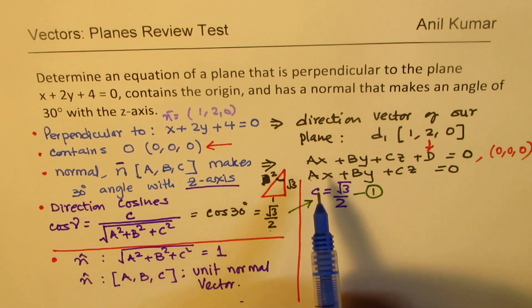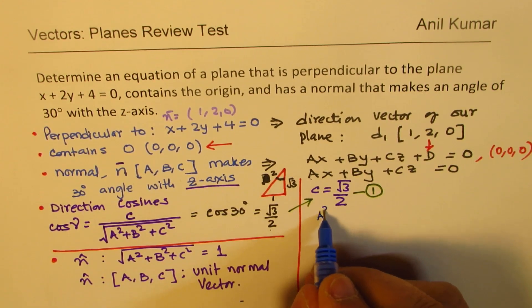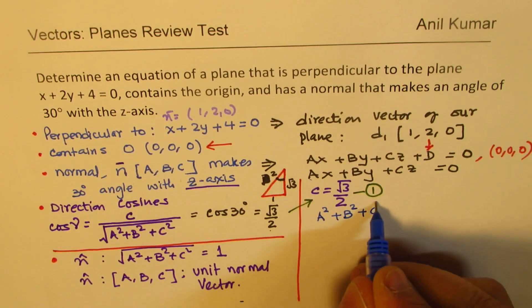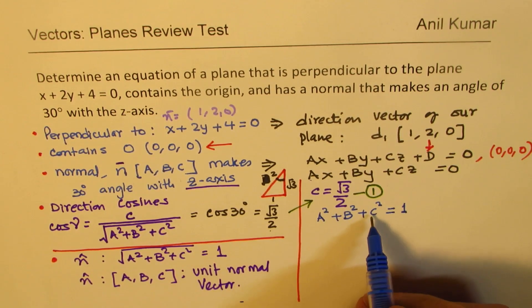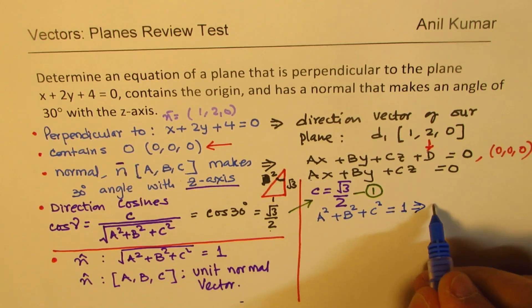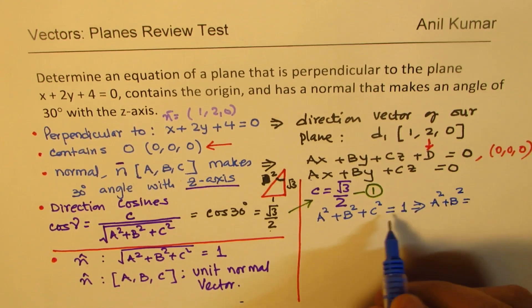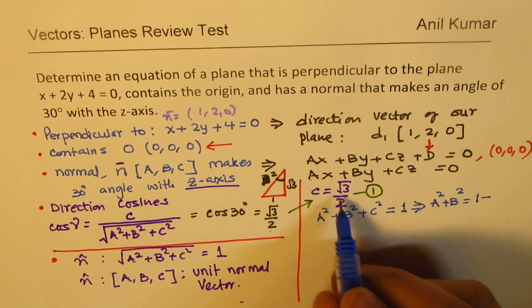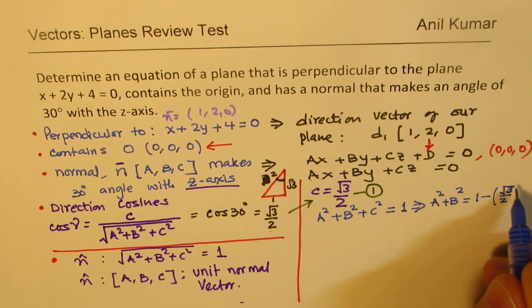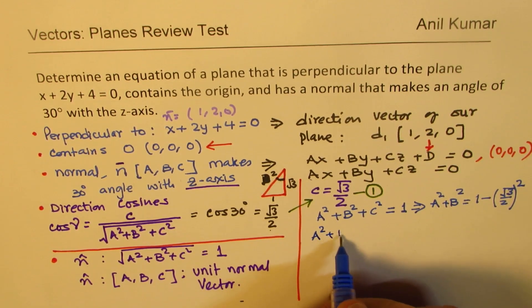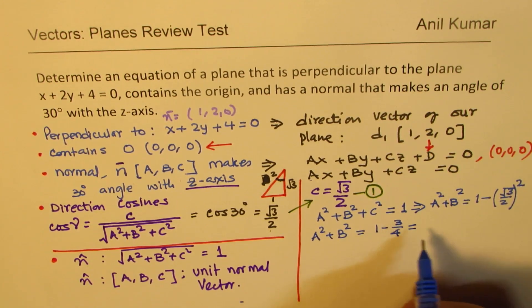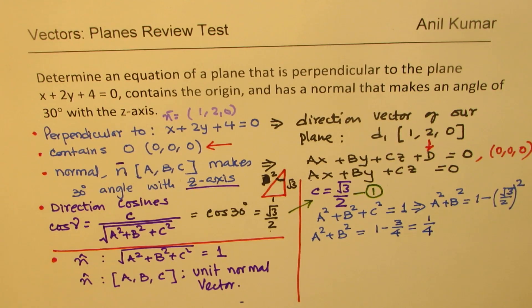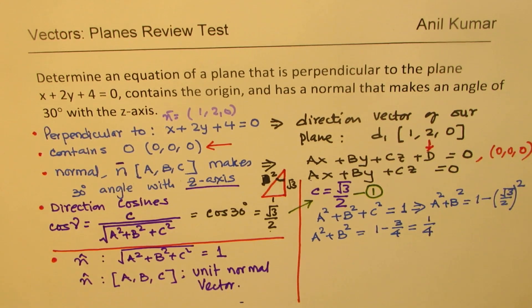Since this is a unit vector, a squared plus b squared plus c squared should equal 1. We know what c squared is, so this implies a squared plus b squared equals 1 minus the square of square root 3 over 2, which is 1 minus 3 over 4. That gives a squared plus b squared equals 1 over 4. We'll call this our second equation.